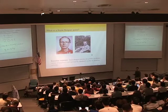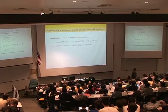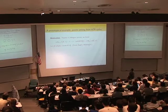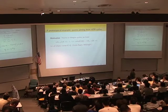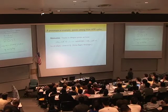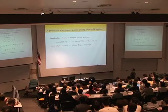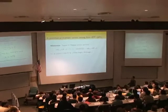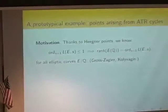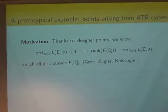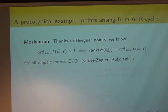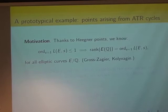I want to begin by giving a prototypical example — points arising from ATR cycles — and first some motivation. Thanks to Heegner points, as Victor explained yesterday, we have the fantastic result giving strong evidence for the Birch and Swinnerton-Dyer conjecture: if the order of vanishing of the Hasse-Weil L-series of an elliptic curve is at most one, then the rank is exactly as predicted by BSD. We also know Sha is finite in those cases. That's true for all elliptic curves over Q, following from the work of Gross-Zagier and Kolyvagin.